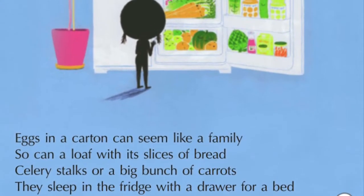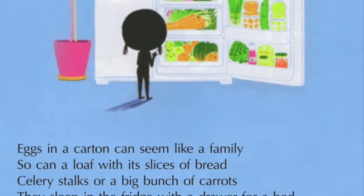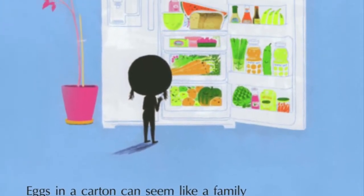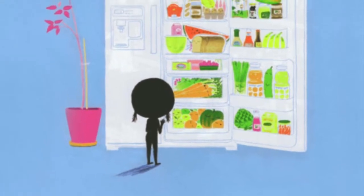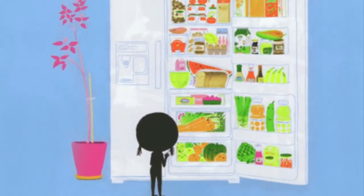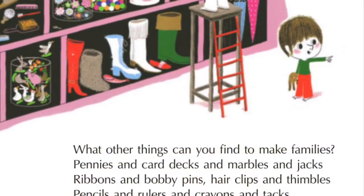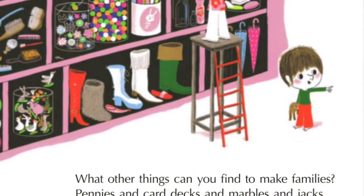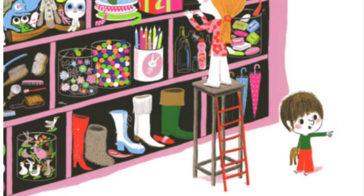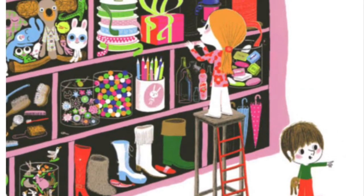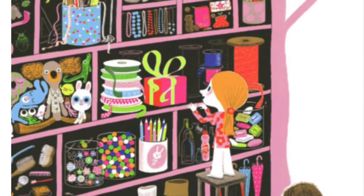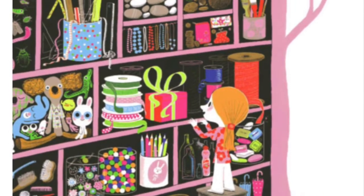Eggs in a carton can seem like a family, so can a loaf with its slices of bread. Celery stalks or a big bunch of carrots — they sleep in the fridge with a drawer for a bed. What other things can you find to make families? Pennies and card decks and marbles and jacks, ribbons and bobby pins, hair clips and thimbles, pencils and rulers and crayons and tacks.